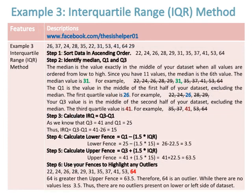Example three is the interquartile range (IQR) method. Step one: sort the data in ascending order. Step two: identify the median, Q1, and Q3. Since there are 11 values, the median is the sixth value, which is 31. Q1 is the value in the middle of the first half of the data set excluding the median; the Q1 value is 26. Q3 is the value in the middle of the second half excluding the median; the Q3 value is 41.